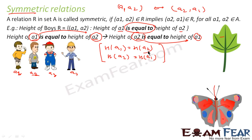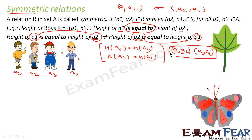A1 equals a2, so a2 equals a1 as well. That means if (a1, a2) is a member of the relation set, then (a2, a1) also has to be a member of the set. If our relation has (a1, a2), then it will also have (a2, a1). Such a relation is called a symmetric relation.